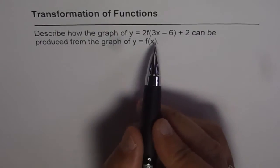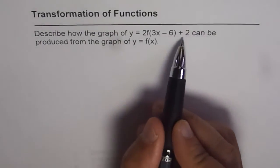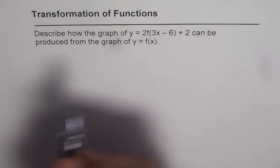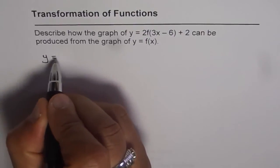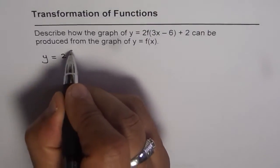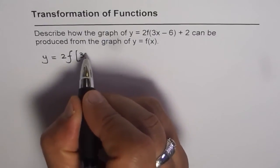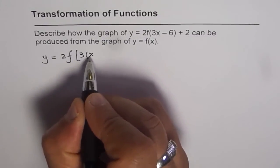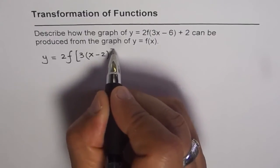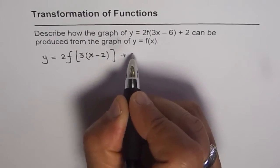To answer this question, it's a good idea to rewrite the transformed function. So I'll write transformed function as y equals 2 times f of, I'll factor 3 out. It's important to do so. We get x minus 2 plus 2, right?